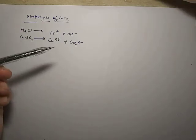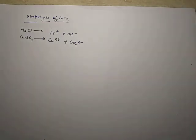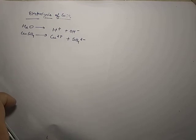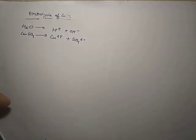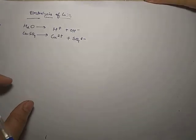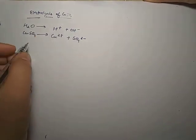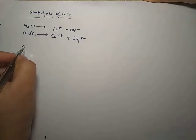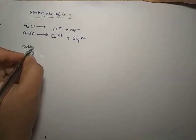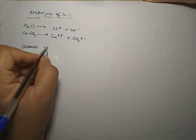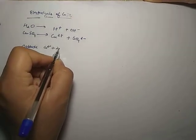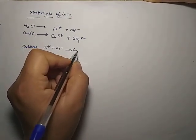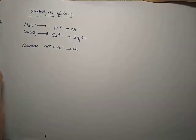Out of the two positive ions, copper will be preferred at the cathode. If you haven't watched my previous video, this will be difficult to understand, so go through that first. The cathode reaction is: Cu²⁺ + 2e⁻ → Cu. This copper deposit is a reddish brown or pink color.